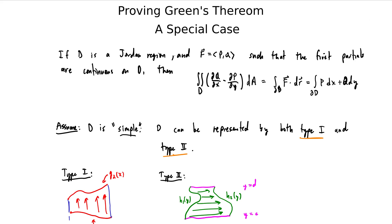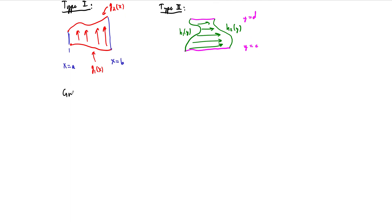Let's start by making an observation. If we zero out one of the two components — say the Q direction — then dQ/dx is also zero. What we must show is that an integral involving only P on one side equals an integral involving only P on the other side. The same will be true if we zero out P and just look at Q. So we can isolate the two components, and Green's theorem can be proved if we can show these two separate identities.